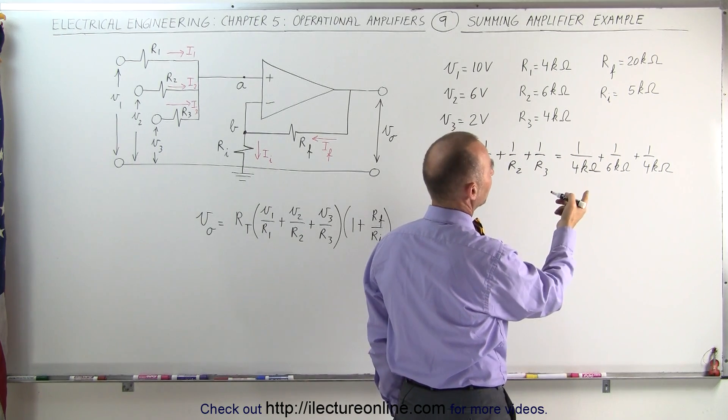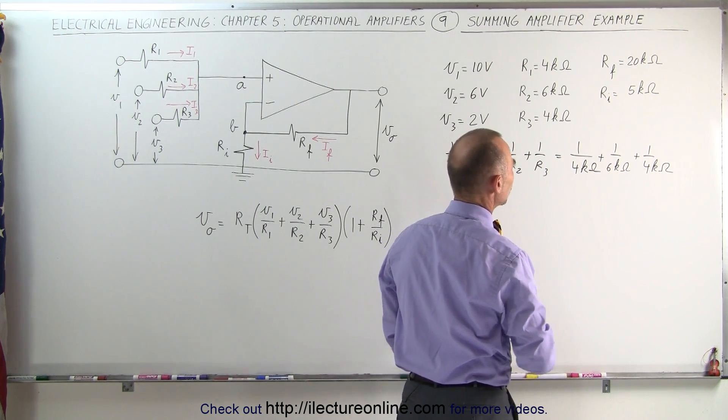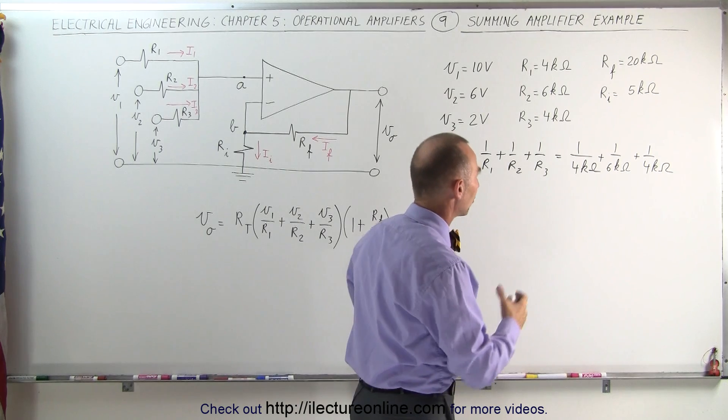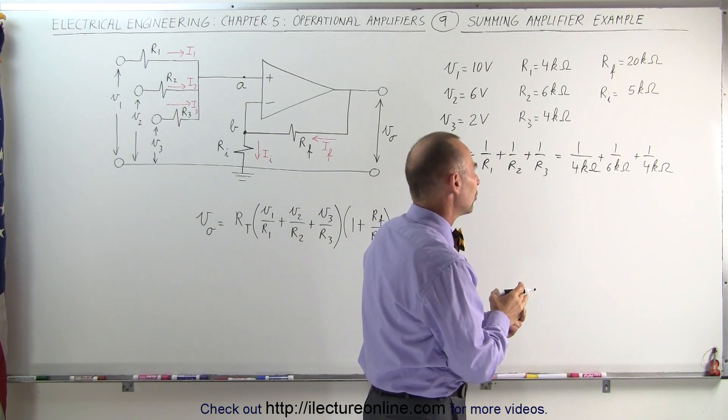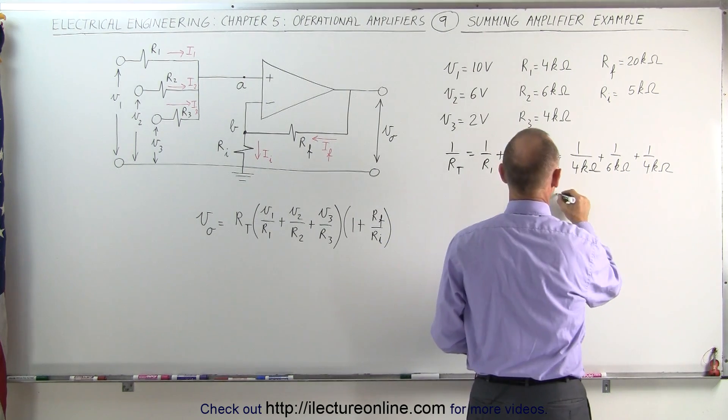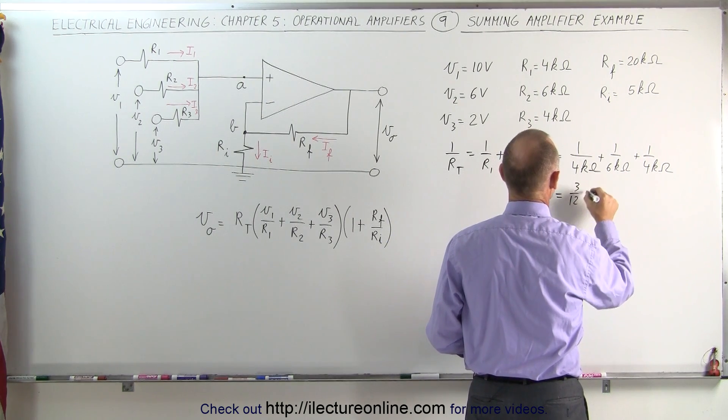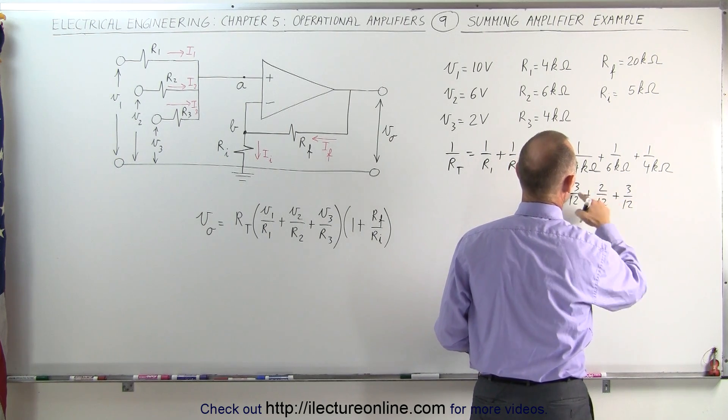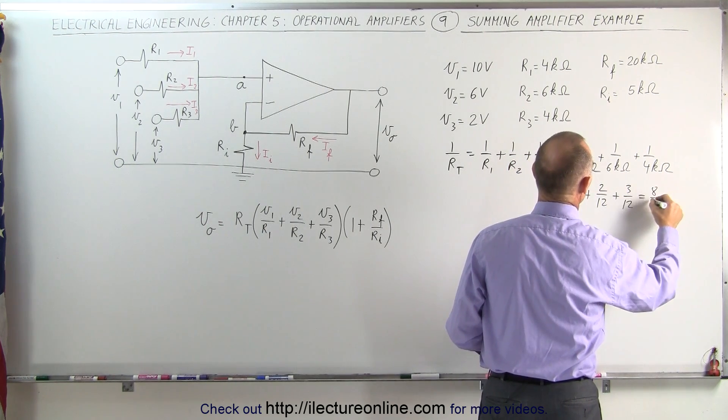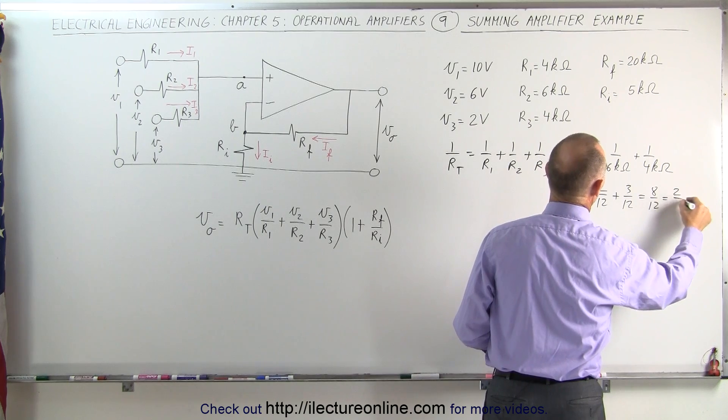Well, the common denominator would be, I can drop the k and the ohms to make things simpler, so we'll just write 1 over 4, 1 over 6, 1 over 4, but if we're going to add those, we need a common denominator of 12. This would be 3 over 12 plus 2 over 12 plus 3 over 12. That's equal to 8 over 12, which is equal to 2 over 3.